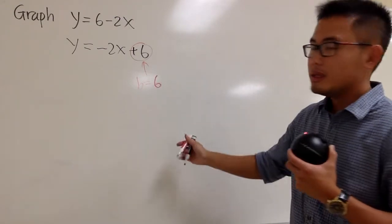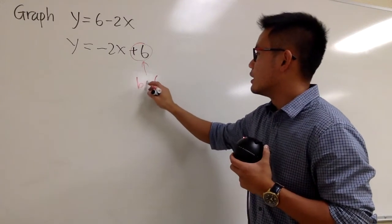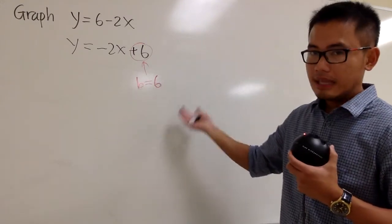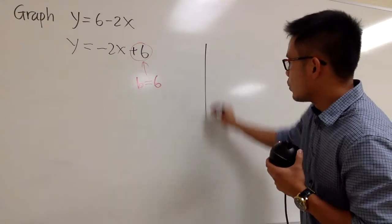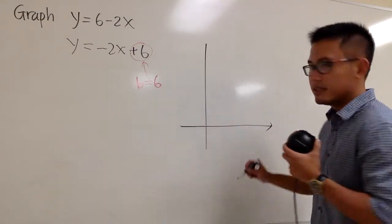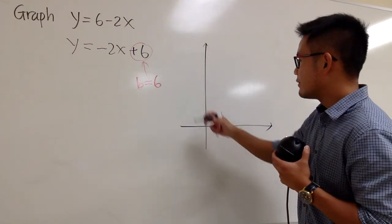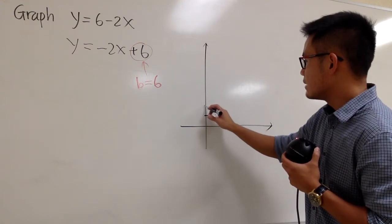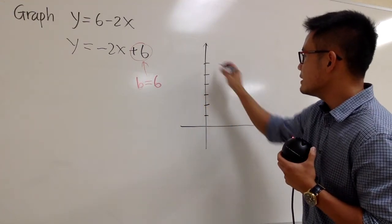So what does this tell me? This means our y-intercept is at 6. So I will just draw my graph paper real quick, like this and like that. And I have to go up 6 times. So I will say, here is 1, 2, 3, 4, 5, 6.